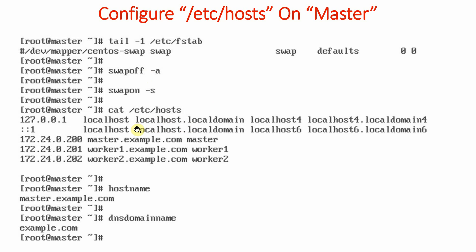Since implementing a full DNS server is complex, we are taking the role of the DNS server by making entries in the /etc/hosts file. We have added: 172.24.0.200 for master.example.com, 172.24.0.201 for worker1.example.com, and 172.24.0.202 for worker2.example.com. These entries are added on all systems so that when we access any node by name, the hosts file resolves it to the correct IP.